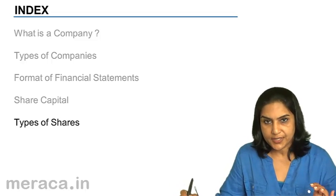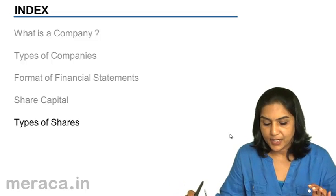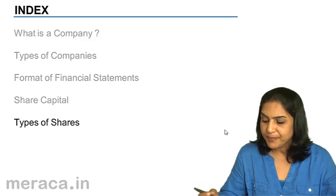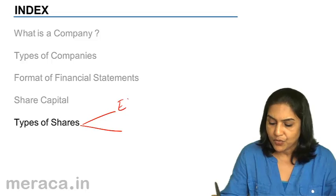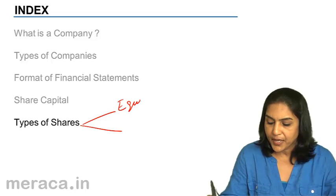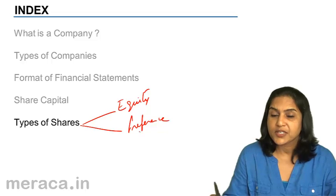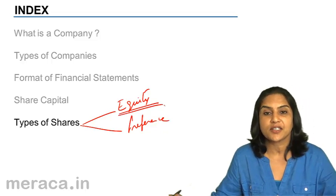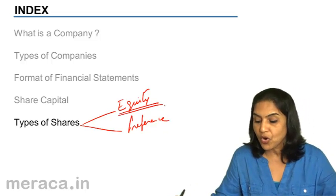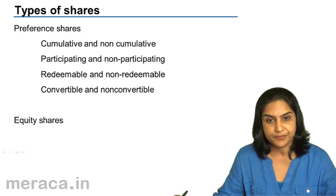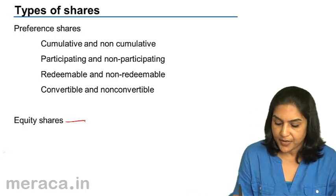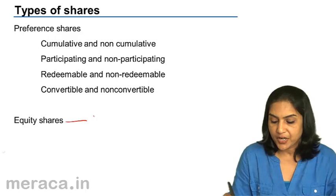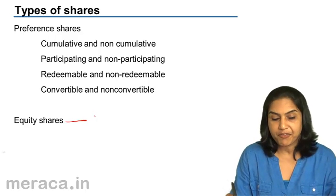Types of shares. There are basically two types of shares: one is equity and one is preference. An equity share is a share which is not a preference share.